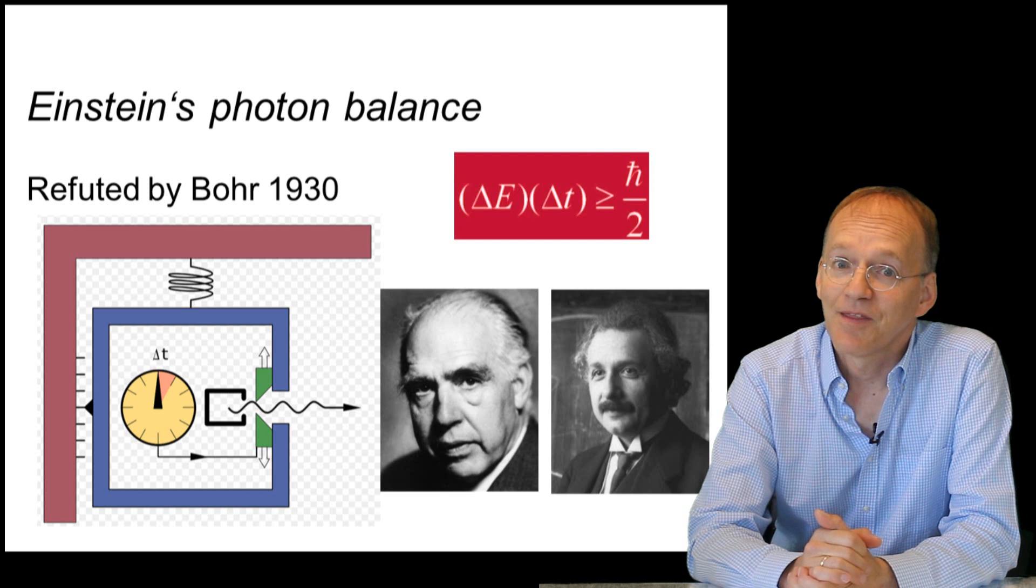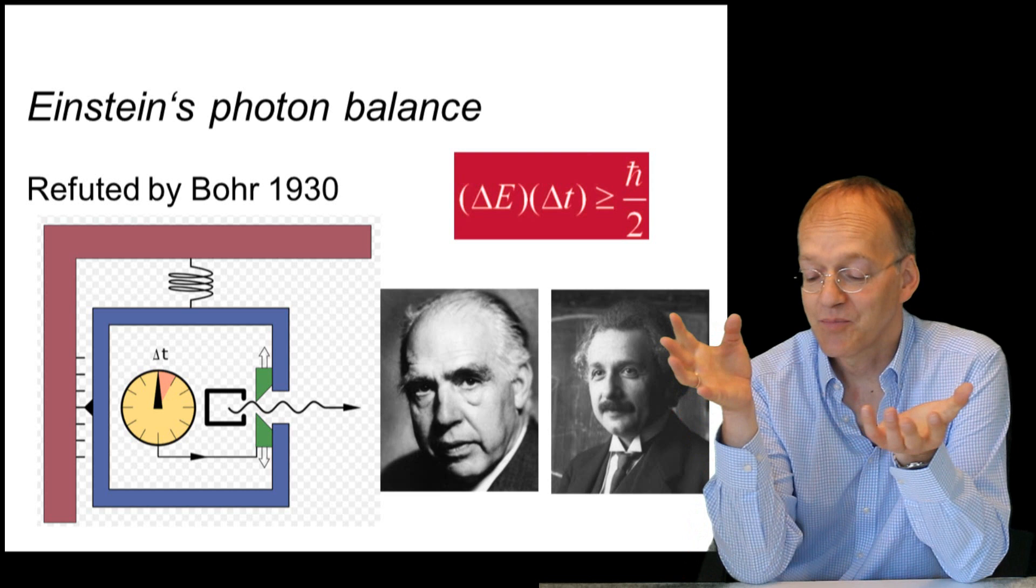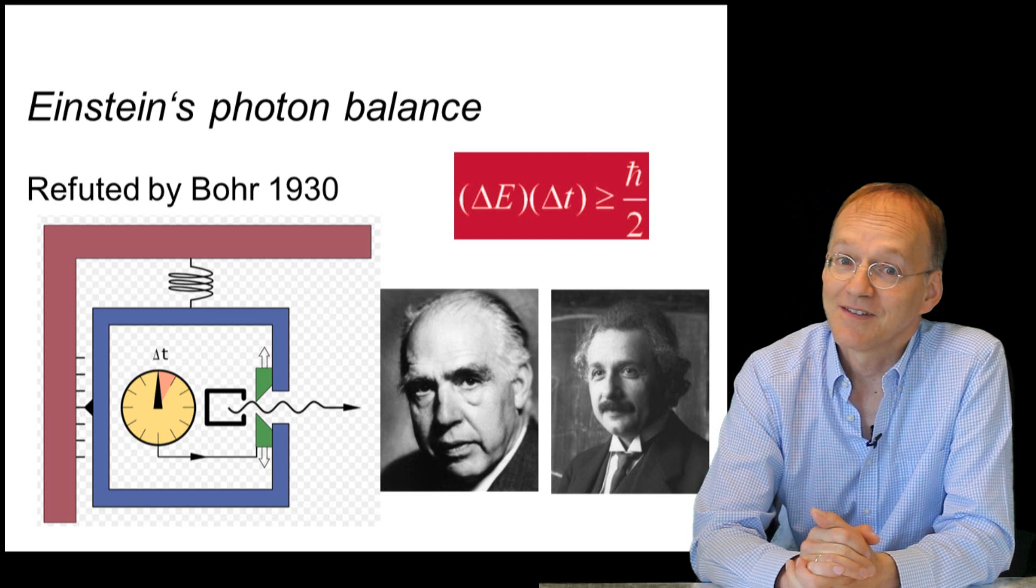At the Solvay conference in 1930, Einstein came up with one of his famous Gedanken experiments, seemingly disproving the uncertainty relation by a setup that precisely measured both the energy of an outgoing photon and the remaining mass. And there, it is said that Bohr had a sleepless night until he came up with his counterargument.